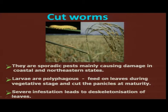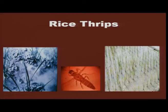Next in order is cutworm, which is again a sporadic pest with nocturnal habit. The caterpillar is the damaging stage, and it is particularly serious in coastal and north eastern states. The damage in the grain maturity stage induces higher economic damage.